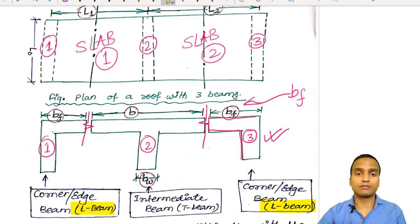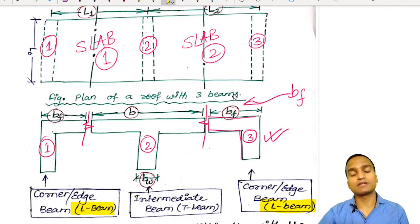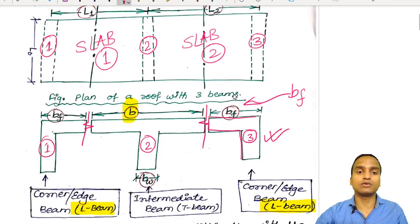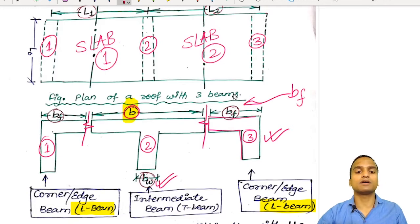For beams in the interior, there will be contribution to the strength of the beam from the slabs on both sides. We have taken a length from the slab on both sides equally, beside the beam. The width Bw is the width of the intermediate beam's web. This intermediate beam has got a T-beam shape.